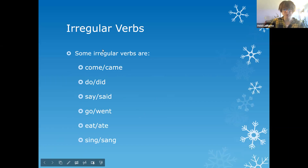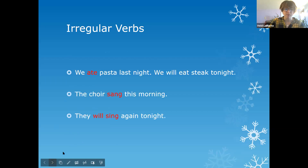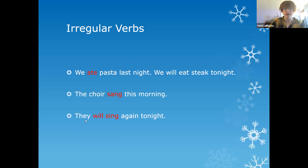In your language arts journal, I want you to choose three irregular verbs. You're going to write a sentence for the present tense verb, and also write a sentence for the past tense verb — just like I did here. I chose 'ate' and 'eat.' I have a sentence for the past tense verb, and a sentence for the future tense because I put 'will.' Remember, anytime we want future, we can put 'will.' I have 'the choir sang this morning' — past tense — and 'they will sing again tonight' — future tense because I have 'will.'